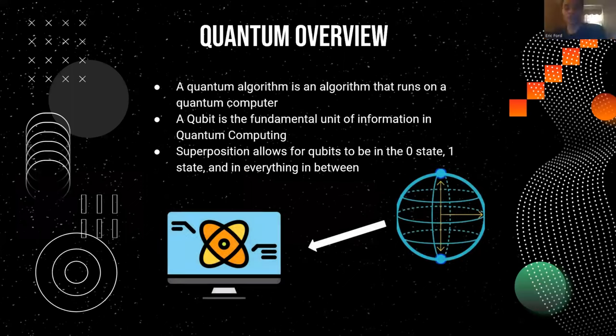Quantum overview. A quantum computer is a new type of computer that takes advantage of the properties of quantum mechanics. A quantum algorithm is an algorithm that runs on a quantum computer. A qubit is the fundamental unit of information in quantum computing.